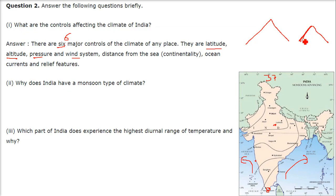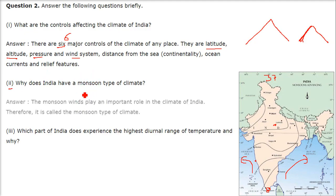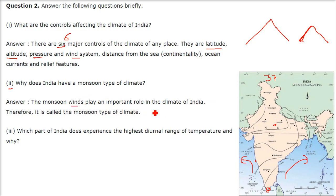The second question is: why does India have a monsoon type climate? We have four different seasons, and two of them are the onset and withdrawal of monsoon. All things in India are mostly affected by or dependent on monsoon. Monsoon winds play a very vital and important role in the climate of India, therefore it is called the monsoon type of climate.